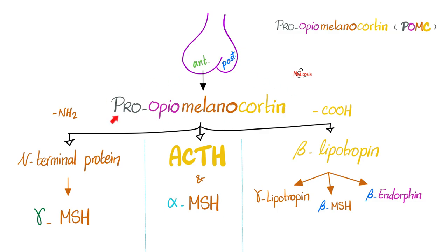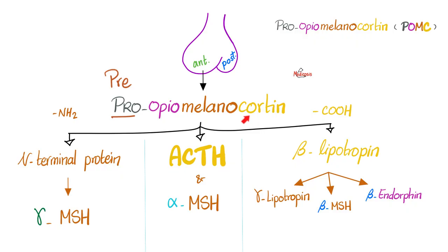That's why the name of this protein is POMC. In medicine, 'pro' means precursor — a precursor to three things. It's pro-opio, because it gives you an opioid: a natural endorphin, like morphine but natural. It's pro-melano, because it gives you MSH, which produces melanin from the melanocyte. And it's pro-cortin, because it gives you ACTH, which stimulates the adrenal cortex to secrete cortisol. That's why it's called pro-opio-melano-cortin. Whoever named this protein did a very good job.